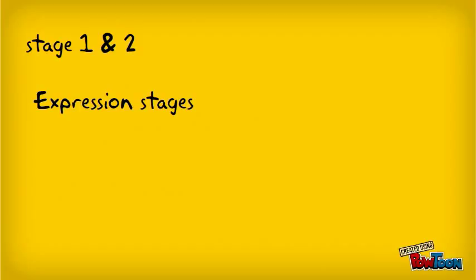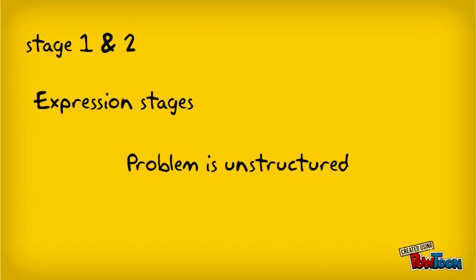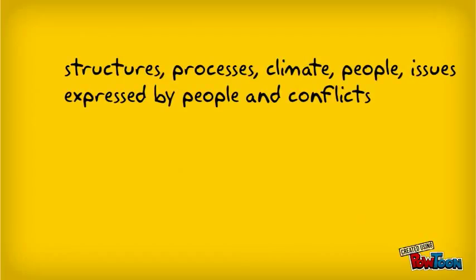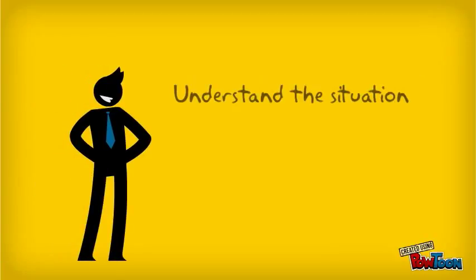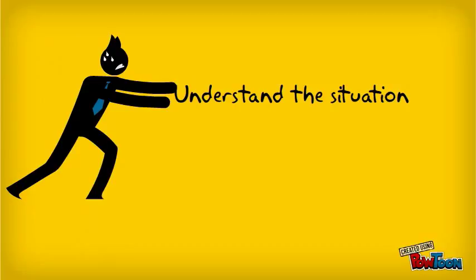The Soft Systems Methodology consists of seven different stages. Stages 1 and 2 are known as the expression stages, where the situation is defined. The problem is still unstructured and expressed by the participants in a rich picture based on the following guidelines: structures, processes, people, issues expressed by people, and conflicts. Checkland suggests that the best way of doing this is in picture form. It is therefore important to understand the situation in which there is perceived to be a problem.